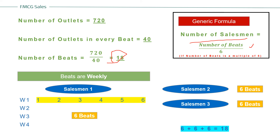If you have a particular number of beats in your territory — say 24 beats — then 24 divided by 6 equals 4, meaning four salesmen are required. This generic formula is not something you must always adhere to, but it can serve as a benchmark. Note: this formula applies cleanly only when the number of beats is a multiple of 6. If you have 25 beats, 25 divided by 6 gives roughly 4-point-something, which still points to approximately four salesmen.